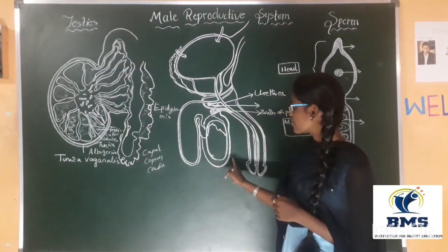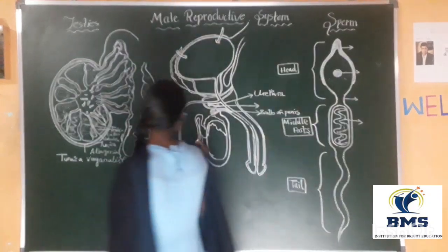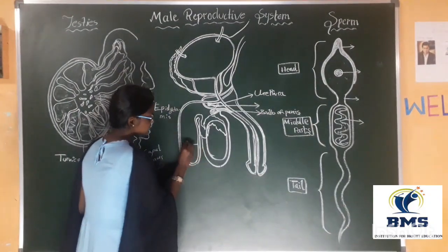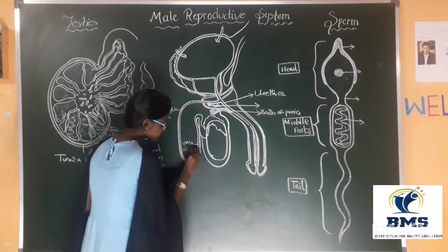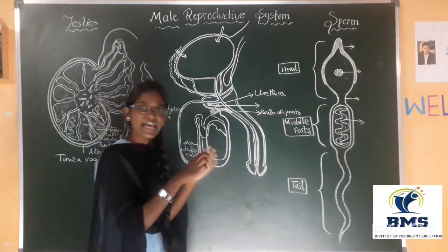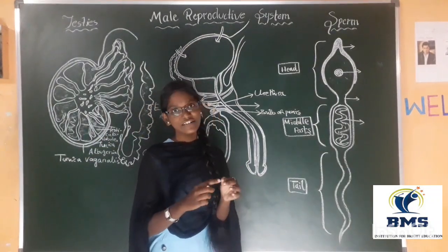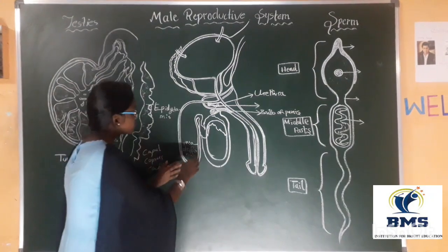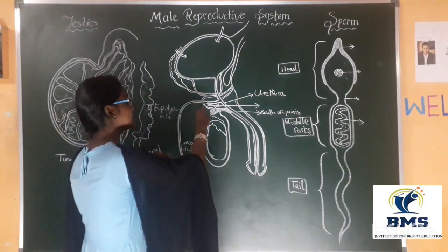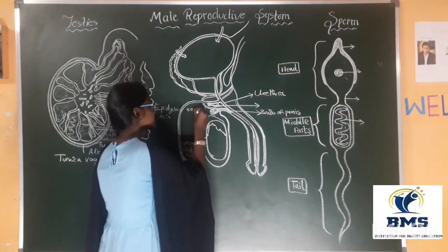Now coming to the vas deferens. This is known as the vas deferens. It is a long, narrow, and muscular tube. See where it is leading to.